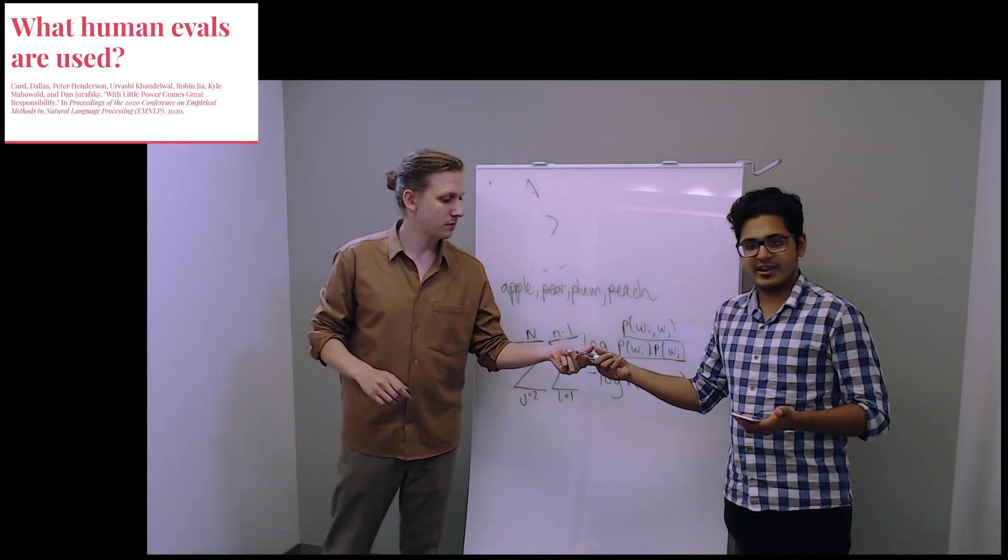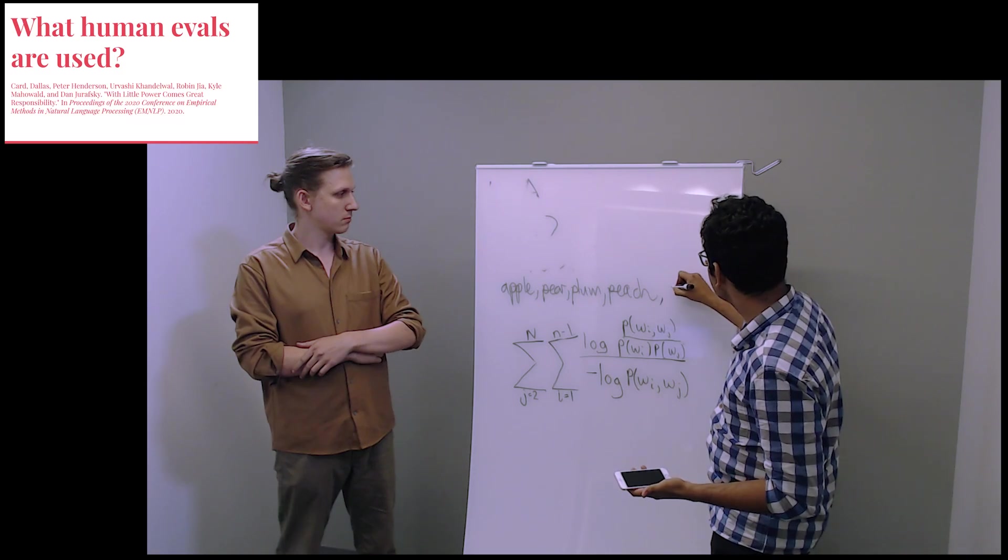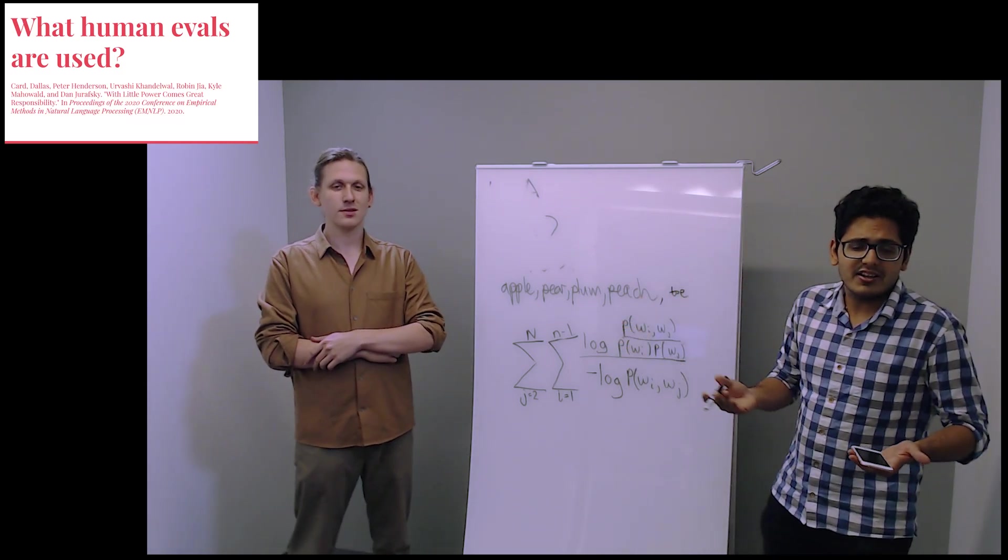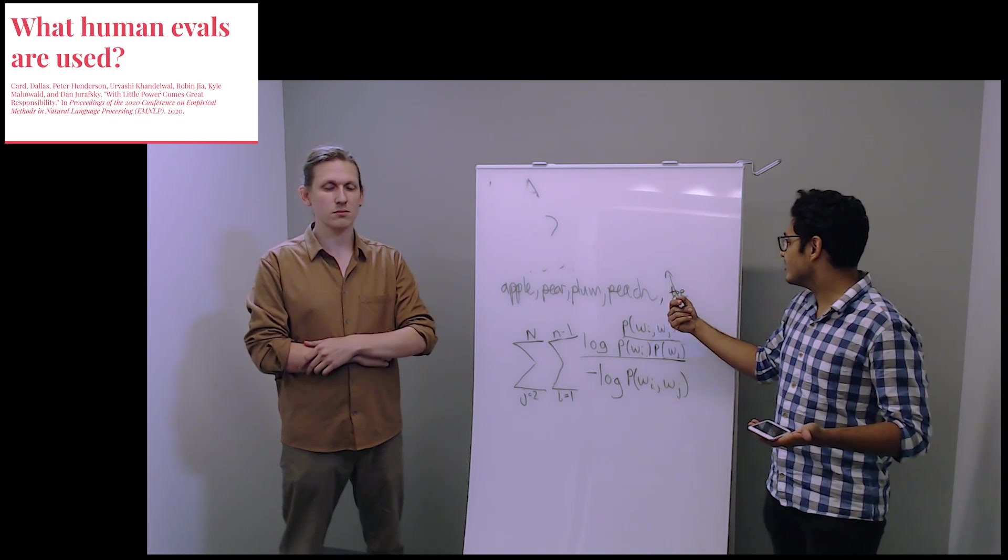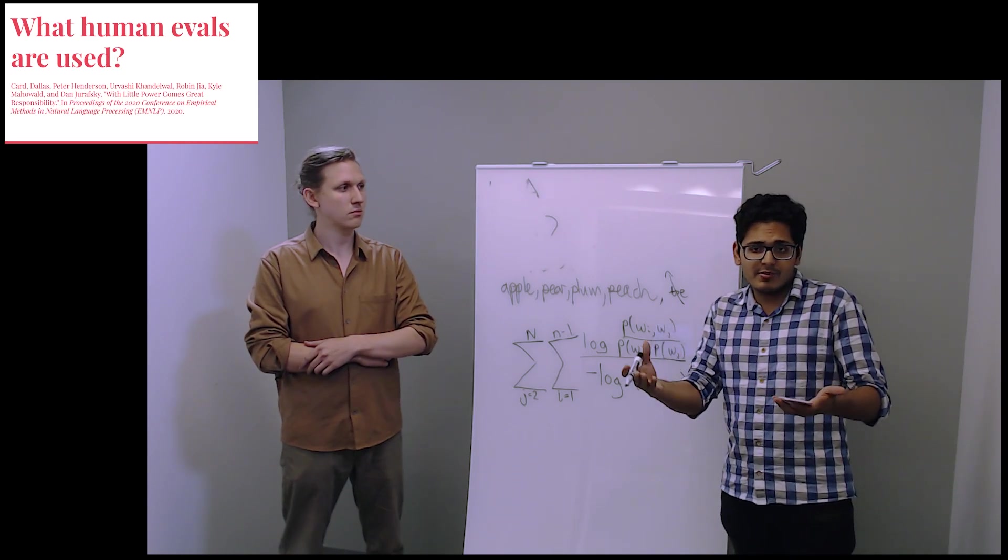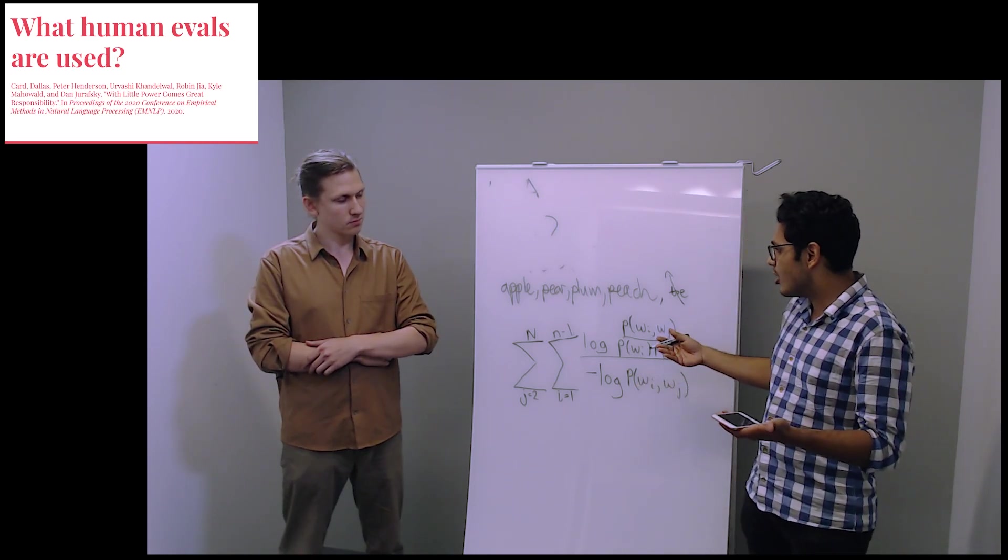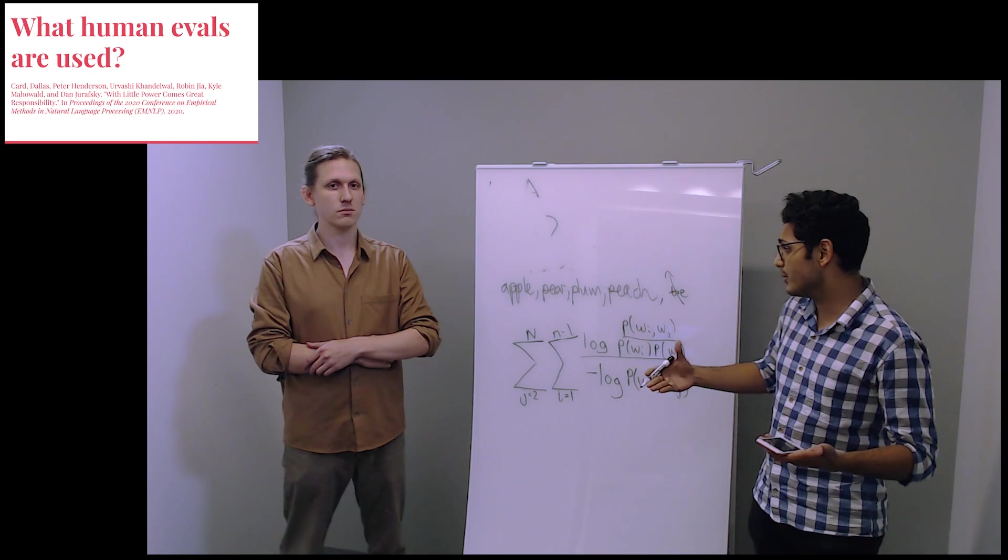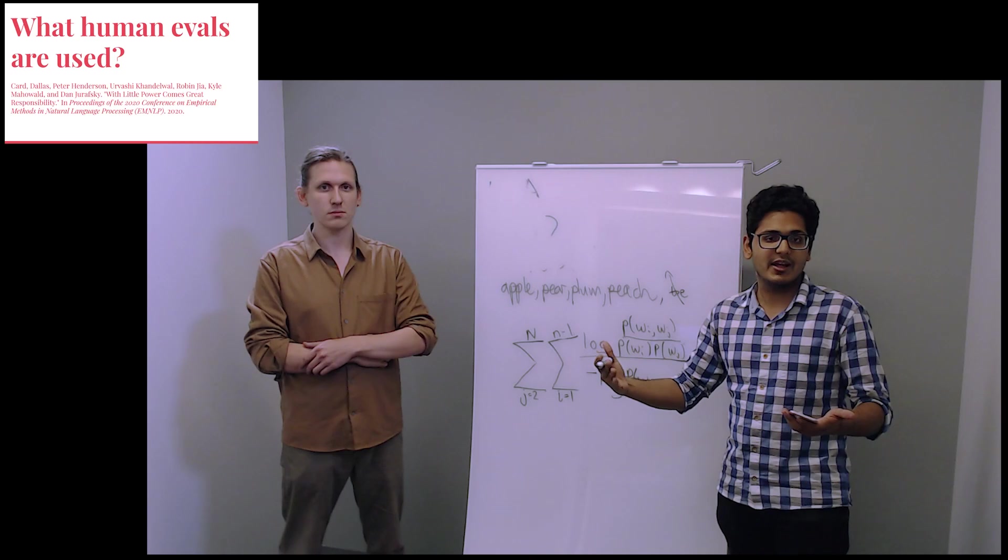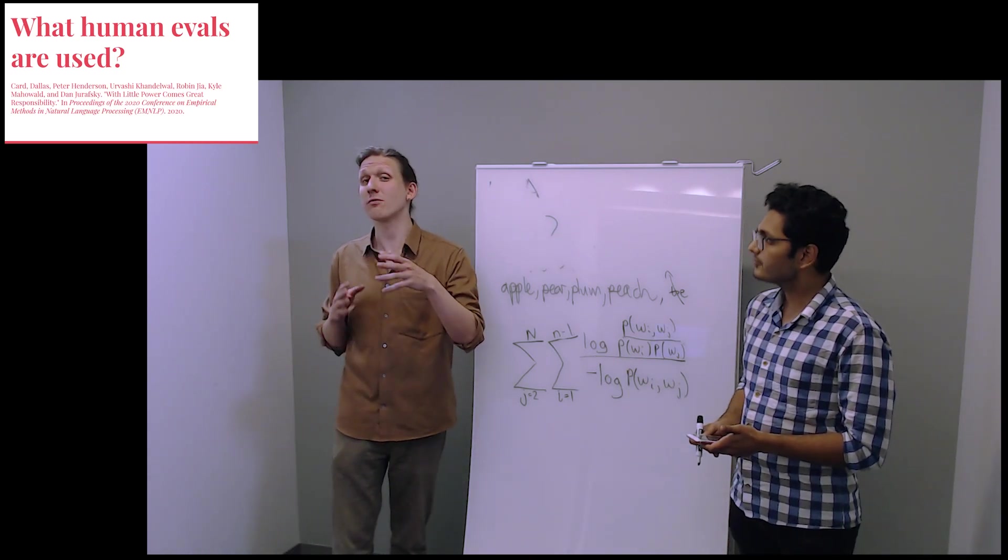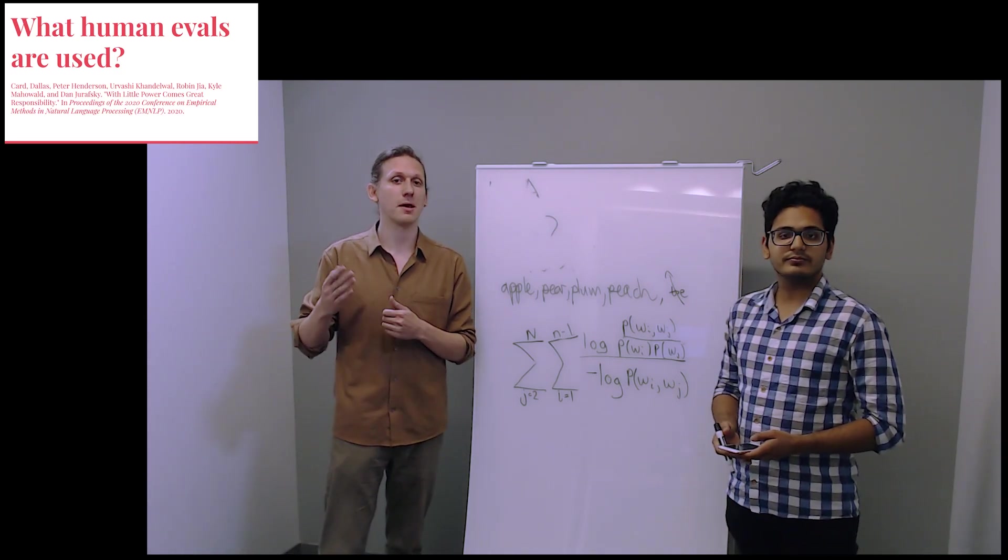And the second task is a variant of pick the odd one out. So if we give you five words, apple, pear, plum, peach, and toe, it's quite easy for you to say that this word is the odd one out. And this is something that we call the intruder word. And you are able to say successfully which one is the odd one out. And if you struggle with it for a topic, then maybe the topic is not so good. Because if the topic was good, and all these words seem to be related, it should be easy to pick the odd one out.